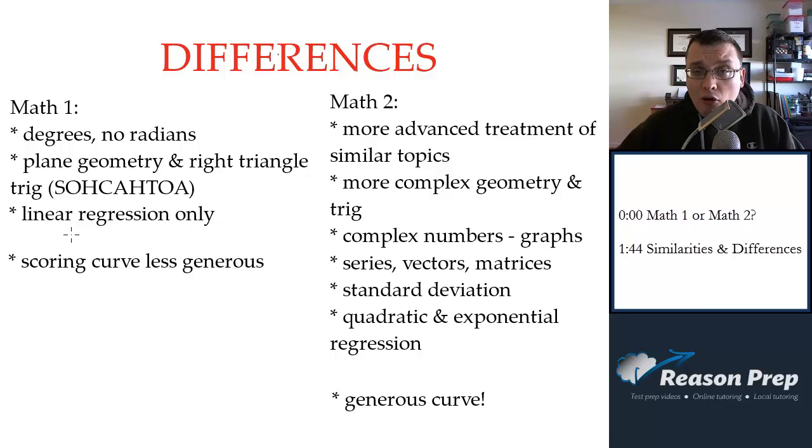In terms of statistics, they only do linear regression, when they do it, which is not very common, but only linear regression. And all this kind of comes together in saying that the scoring curve is therefore less generous. Because it's generally an easier test, the scoring curve is not going to be pretty useful for you at the top end. So usually if you get one wrong, that's enough to knock you out of the 800s. Again, the curves depend on the test, but generally you don't have a lot of room at the top.